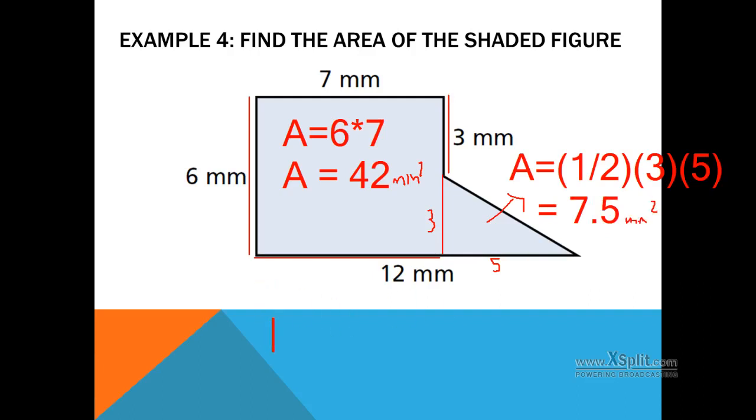If we want to find the total area now, we could say something like, area total is equal to 42 plus 7.5, which is going to be 49.5 millimeters squared.